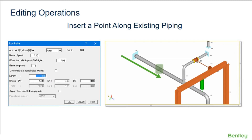By default, instead of inserting additional piping, a point will be inserted halfway along the existing pipe. The distance at which the additional point is inserted from the active point can be adjusted in the run point dialog box as usual.